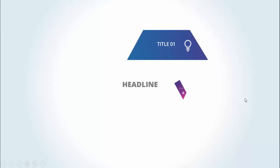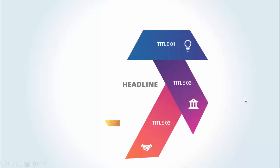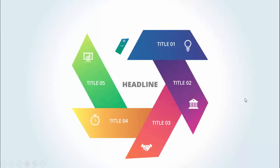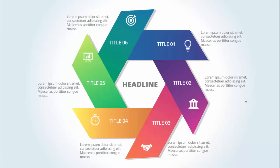In this tutorial I'm going to show you how to create a six-option infographic slide in PowerPoint. Here's how the slide works — I have the headline here, and when I click it will show you the six options in the hexagon shape. You can add the title, the icon, and some detailed text.